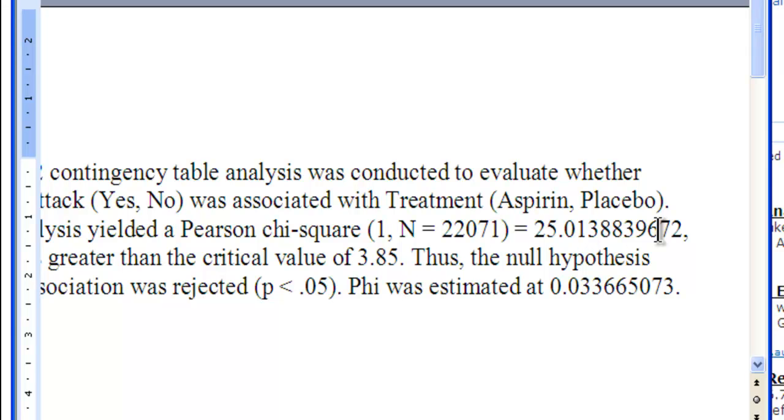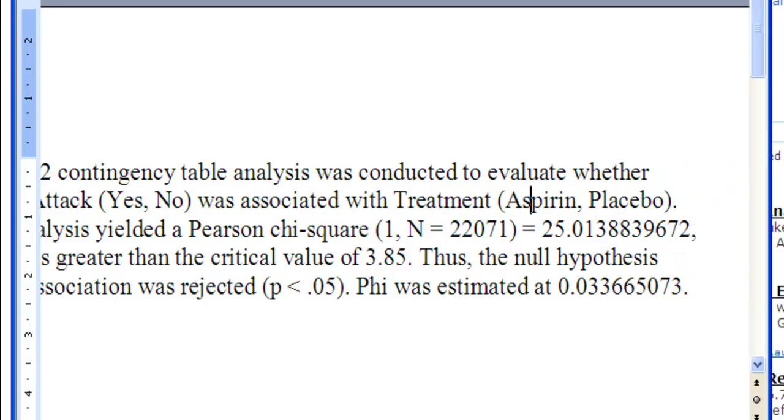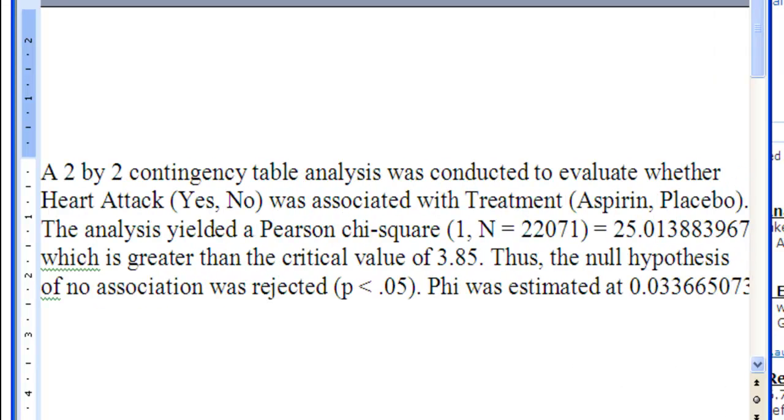The analysis yielded a Pearson chi-square with one degree of freedom and n equal 22,071, and then it gives a chi-square value. Unfortunately with the spreadsheet now, I can't force it to do only two decimal places, so you'll have to adjust that yourself. That's pretty minor. So the analysis yielded a Pearson chi-square value of 25.01, which is greater than the critical value of 3.85.